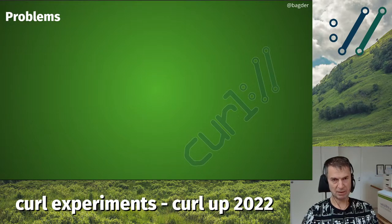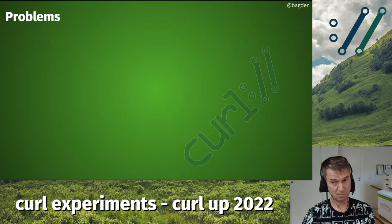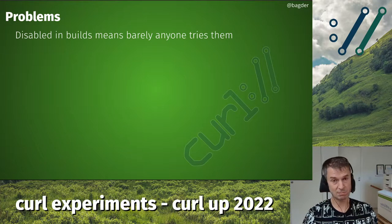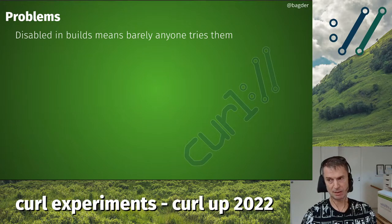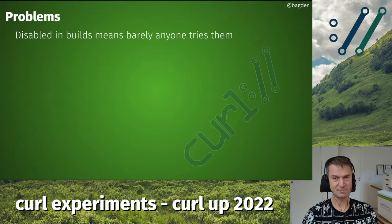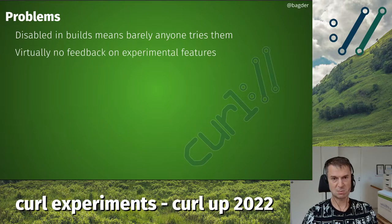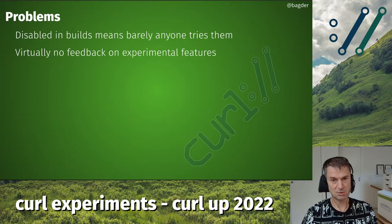The general problem with experimental features working this way is that yeah, we landed the code, but nobody enables them anyway because they're not enabled by default. Very few people actually build curl themselves — most people just use curl built by someone else. Those someone elses build curl for production or a specific purpose, not for running fun curl experiments. So very few people actually try out experimental features, and as a result nobody's telling us how they work because nobody built them.